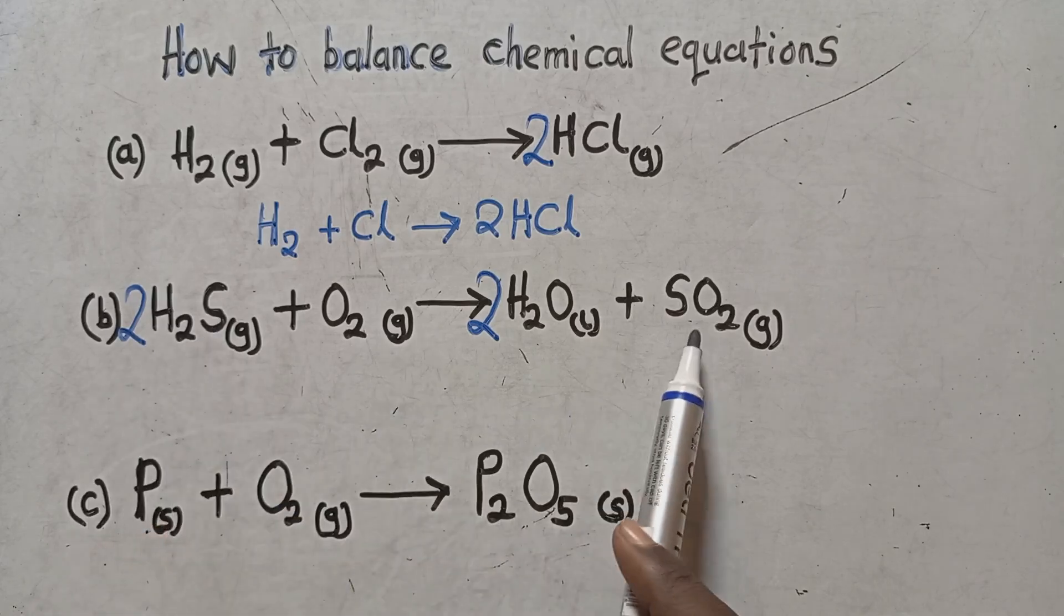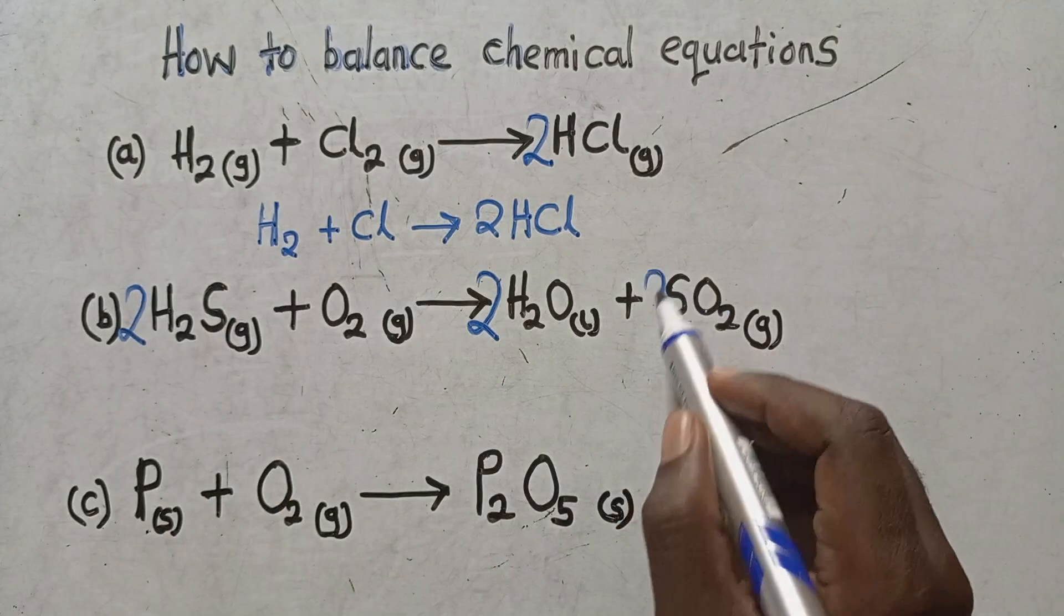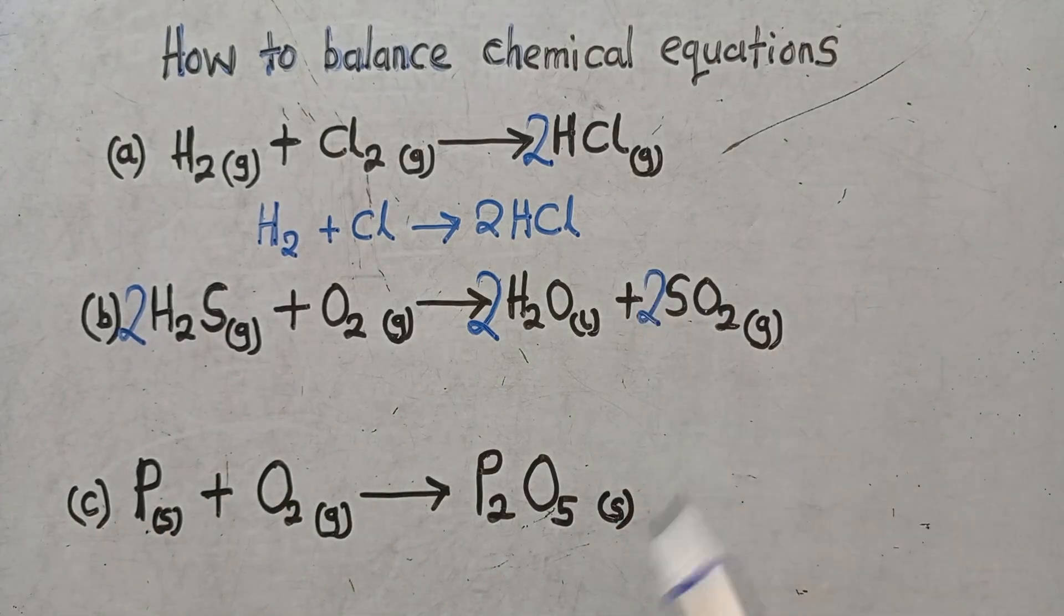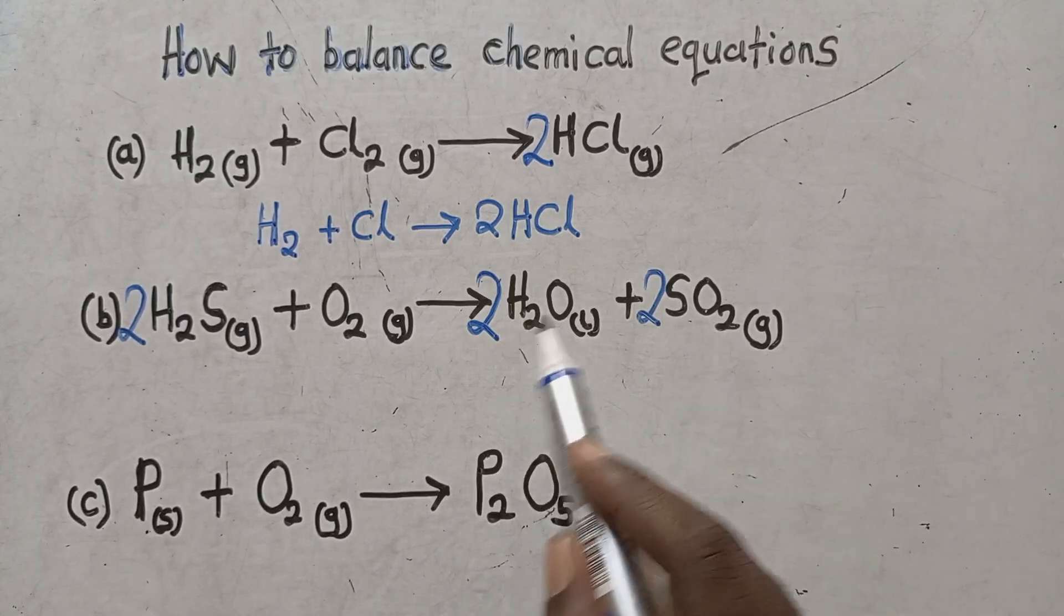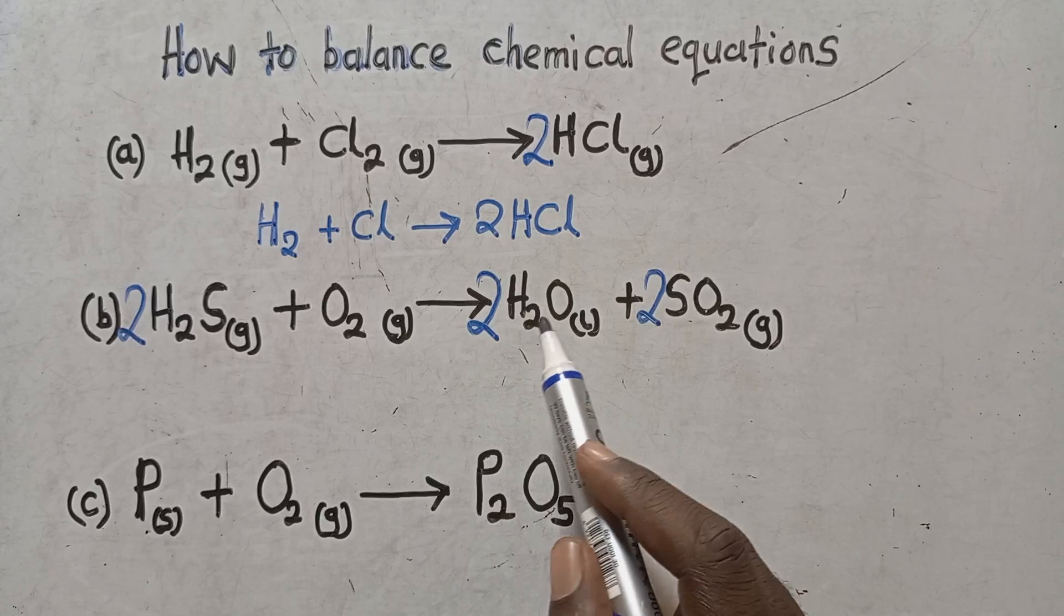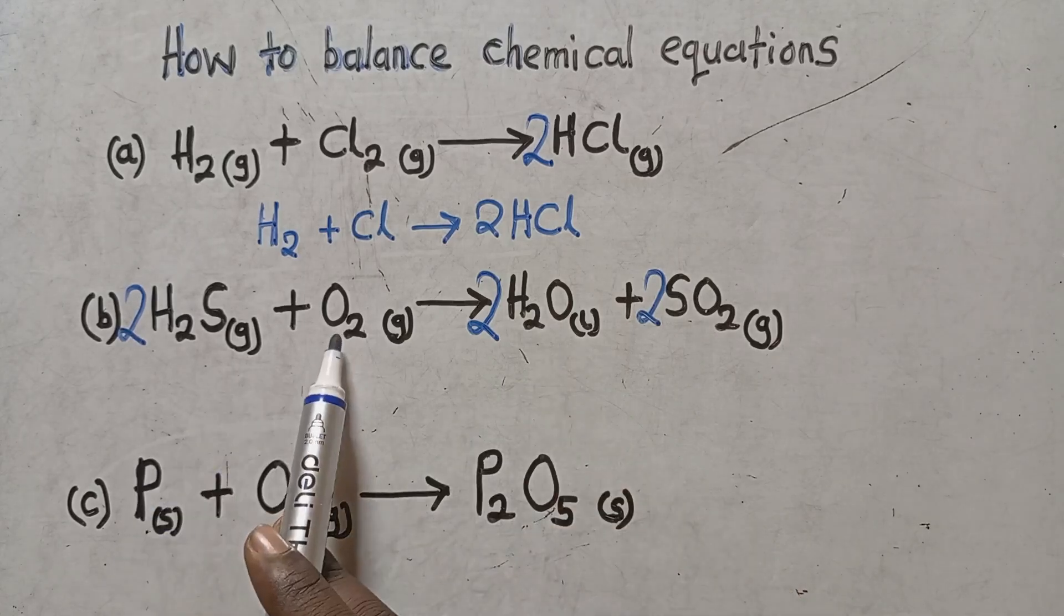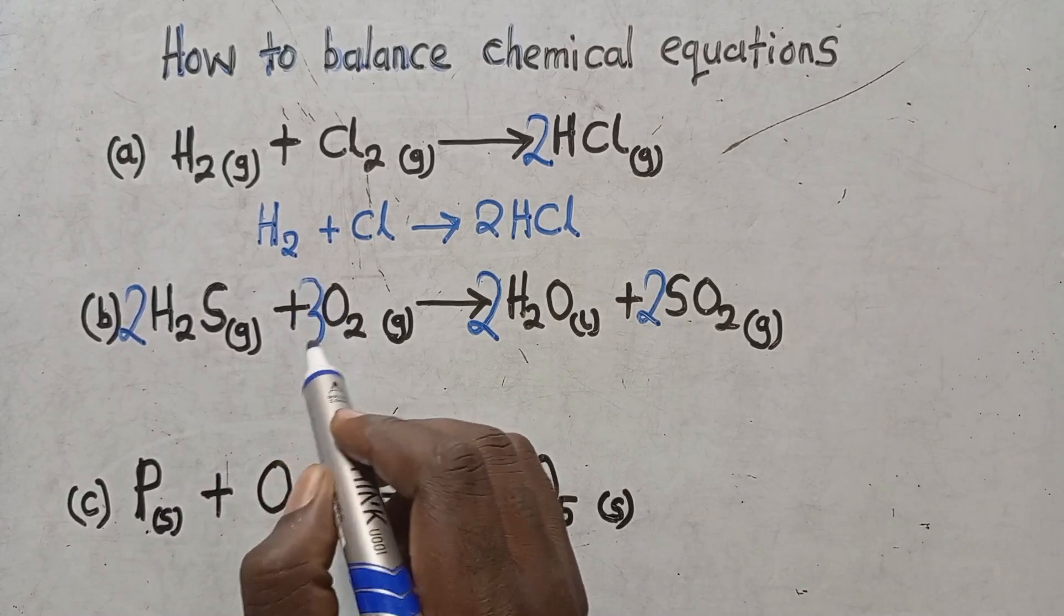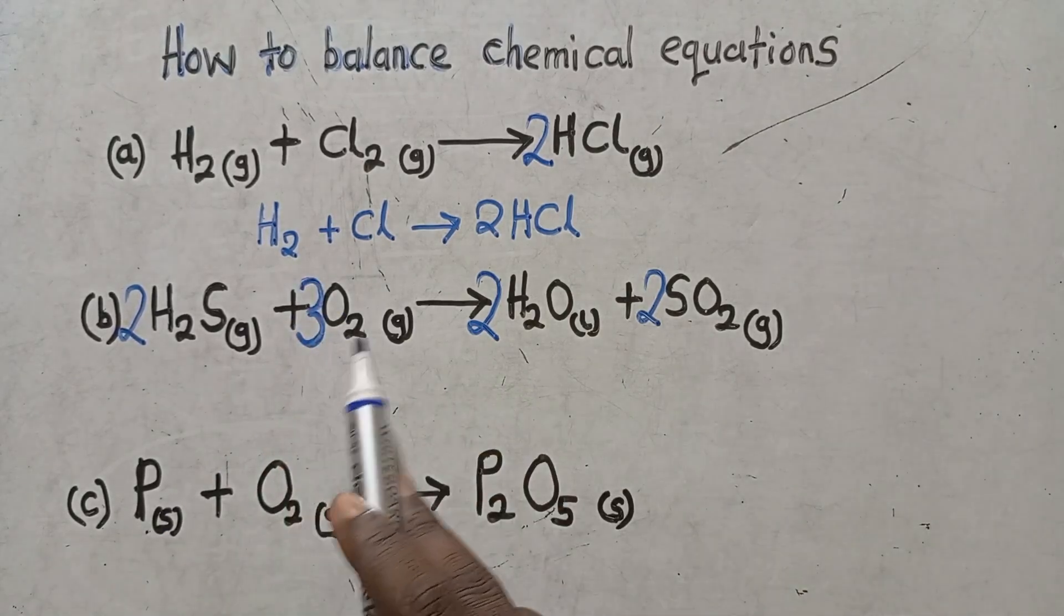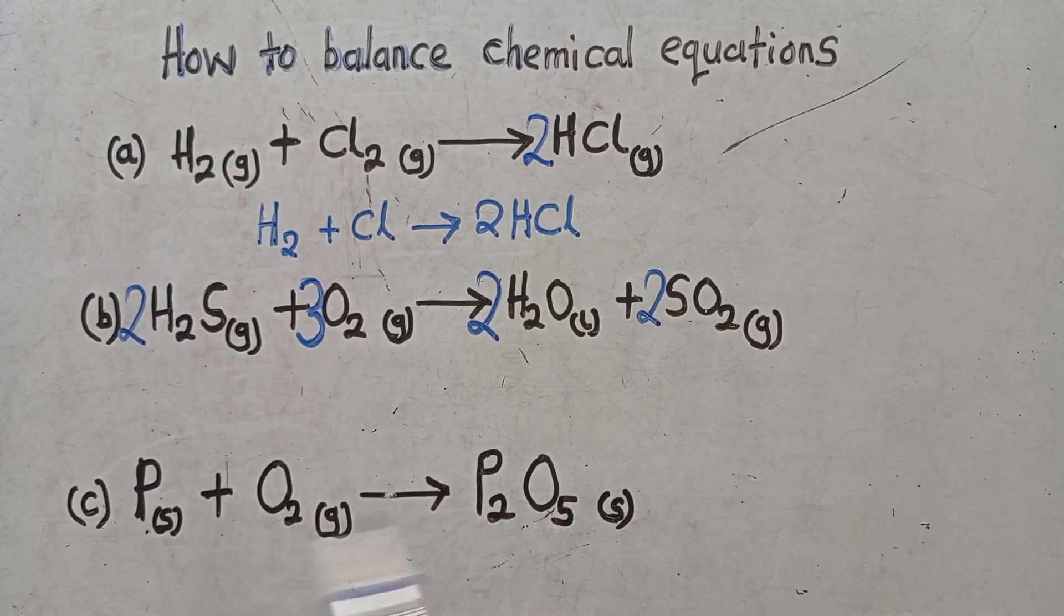Here four balanced. Sulfur has also been changed. Sulfur here how many? Two. Here sulfur one, I put a two here. Putting a two here has also changed what? It has also changed the oxygen atoms. Oxygen how many? Four plus two, six. Here two.